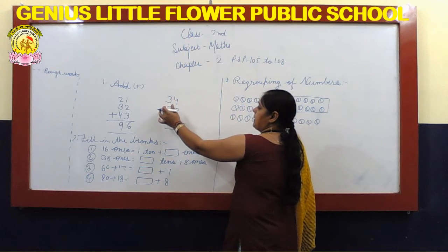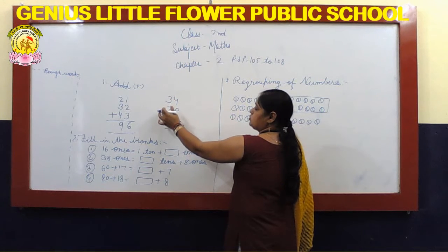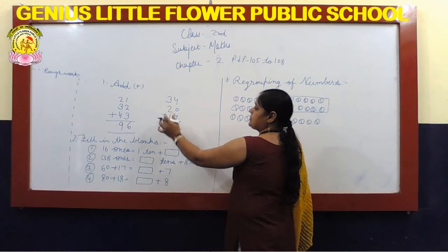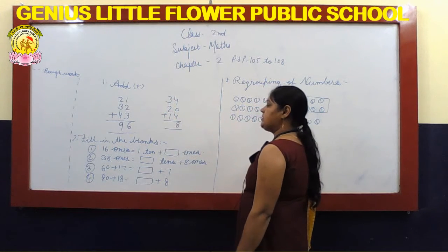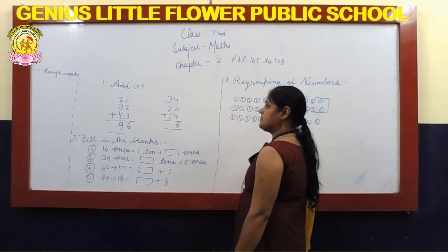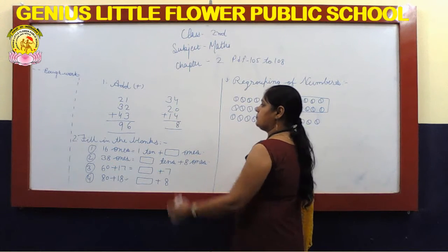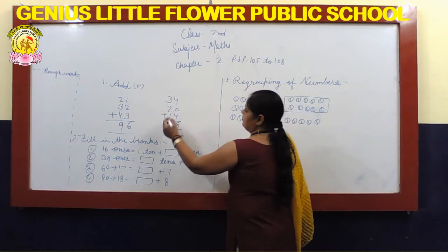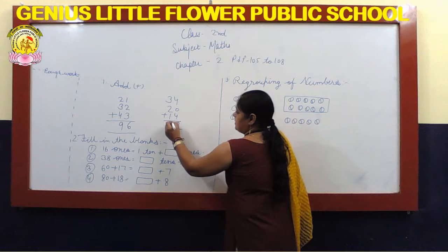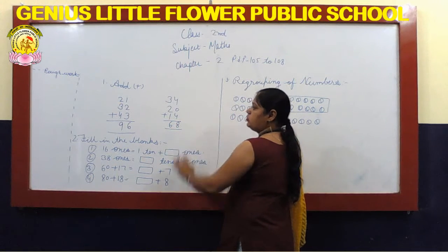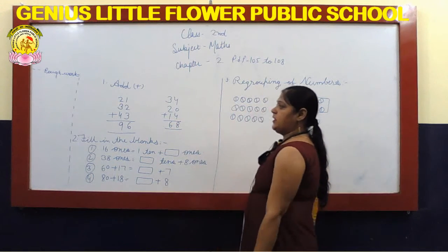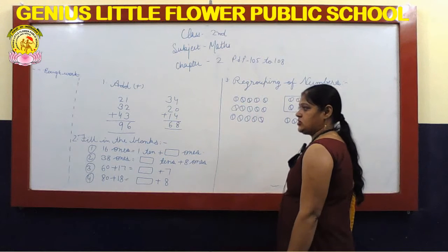Next. 3 tens plus 2 tens plus 1 ten. 3 tens plus 2 tens is equal to 5 tens, plus 1 ten is equal to 6 tens. 6 tens plus 8 ones is equal to 68.